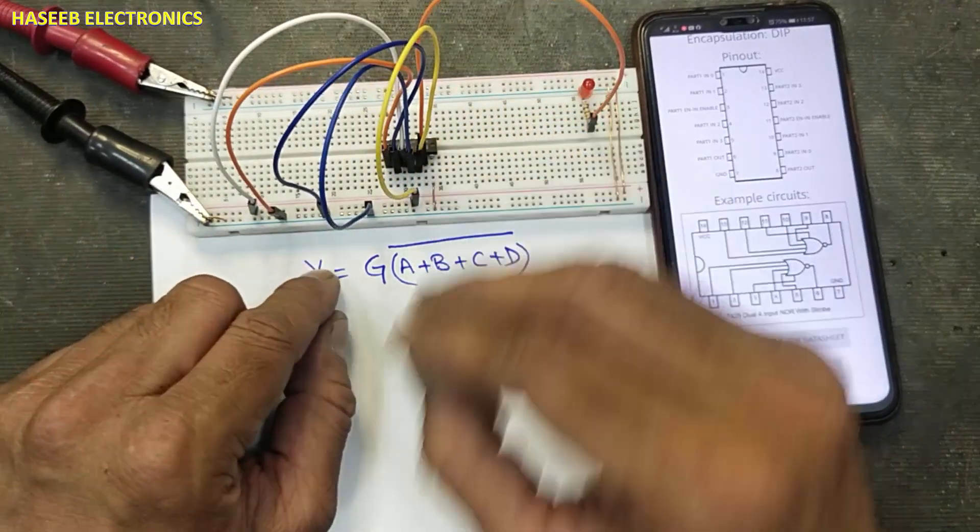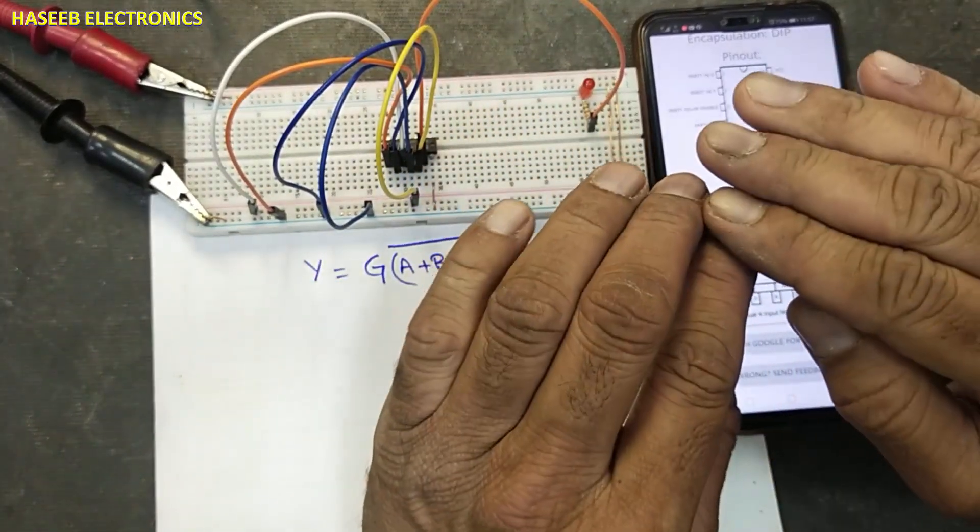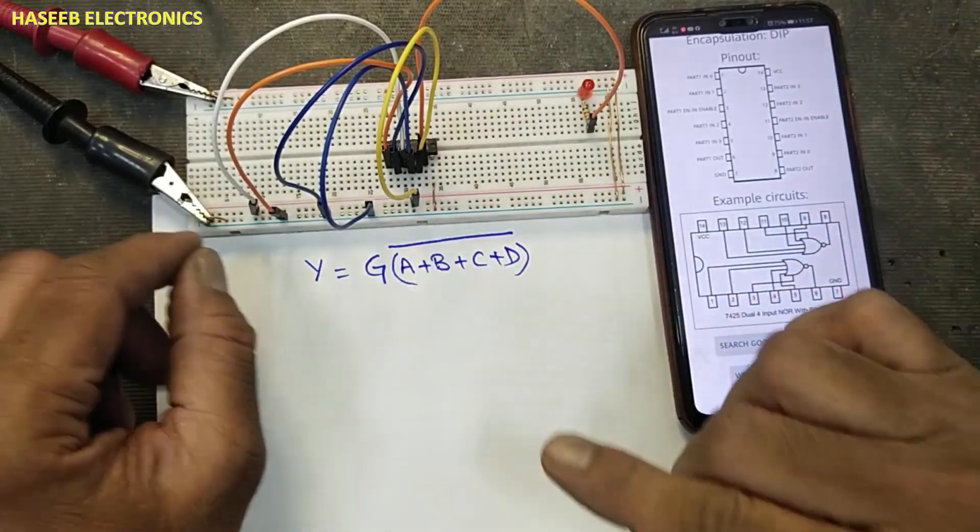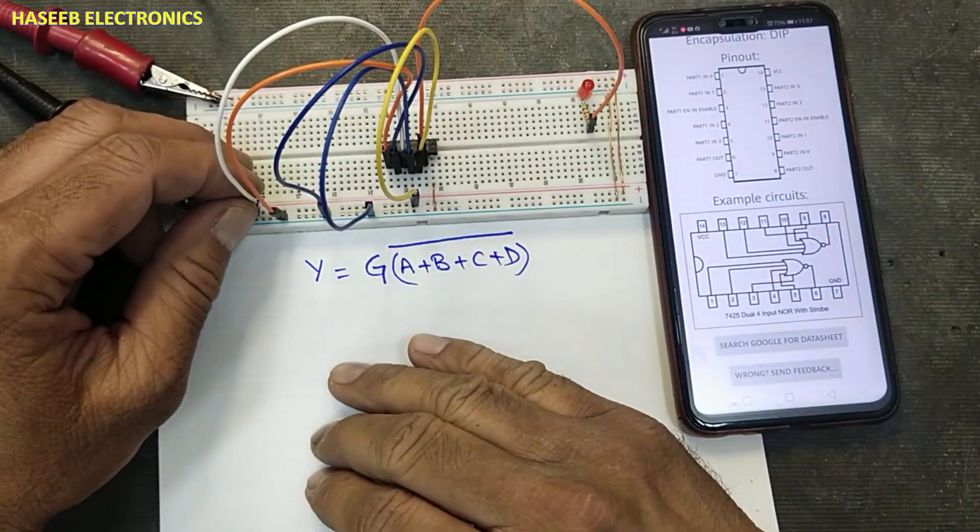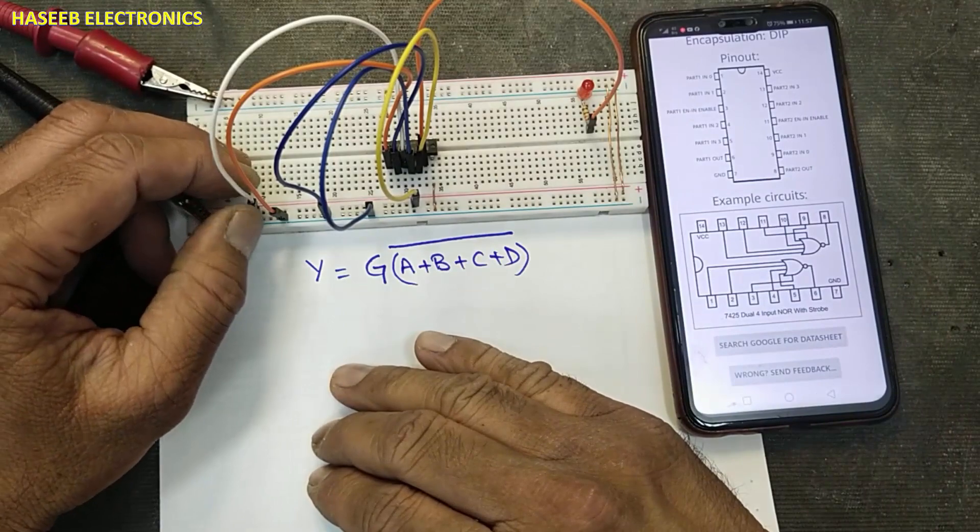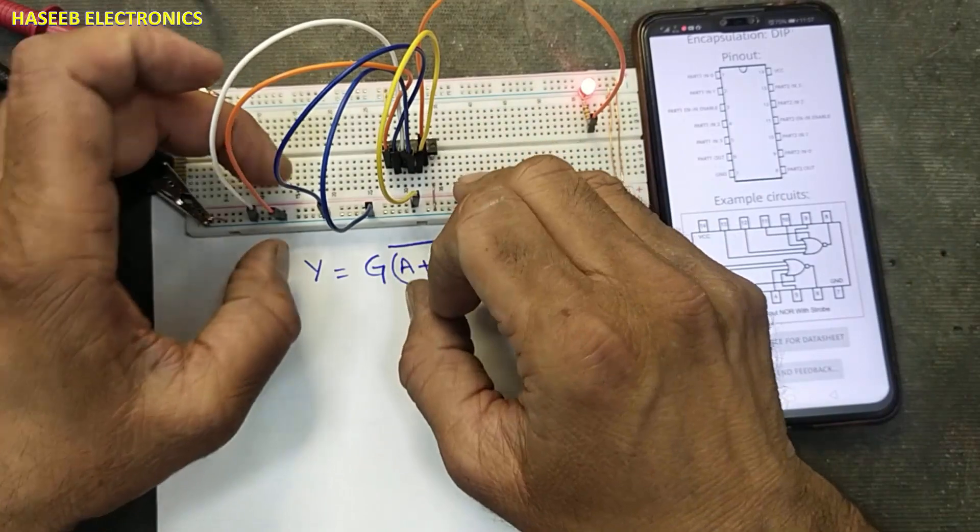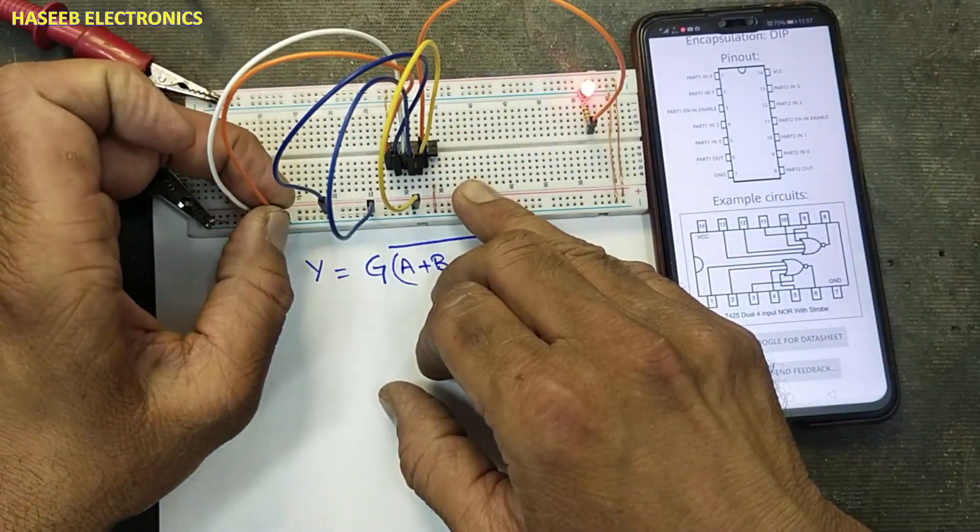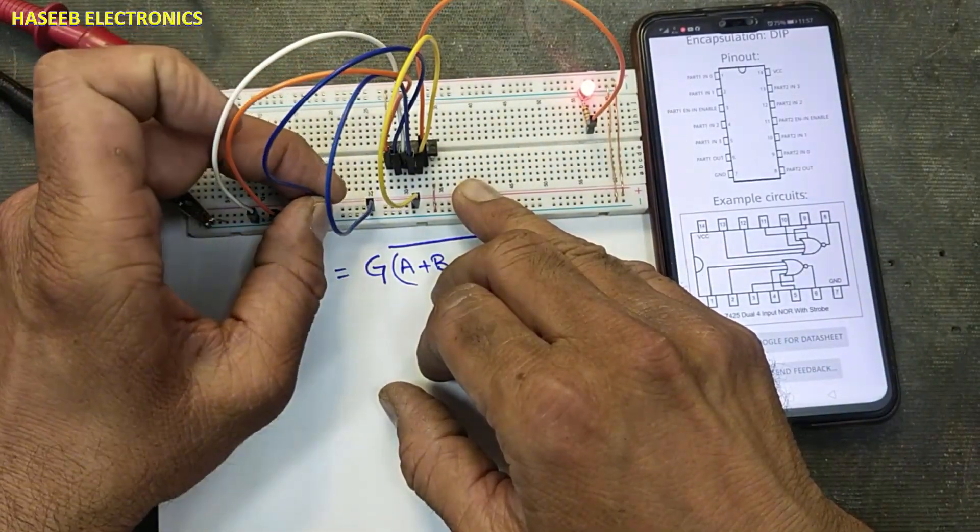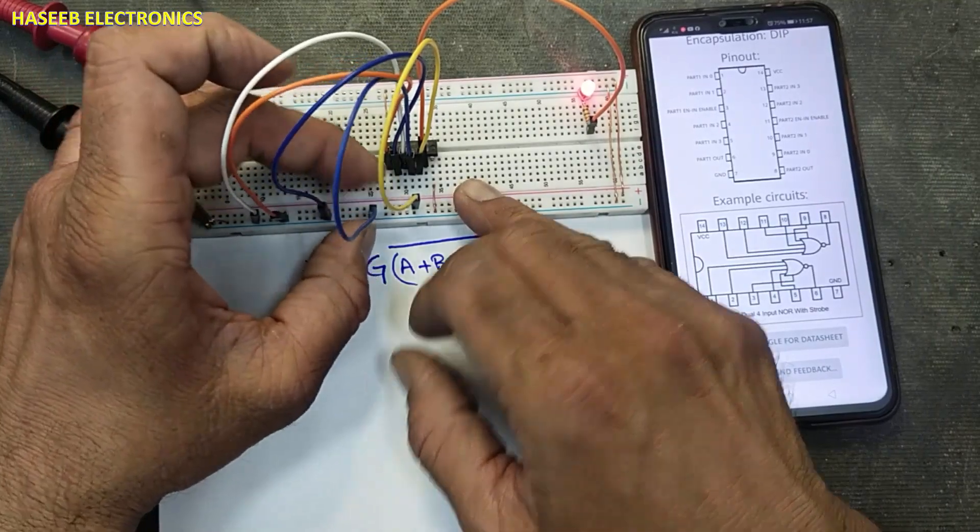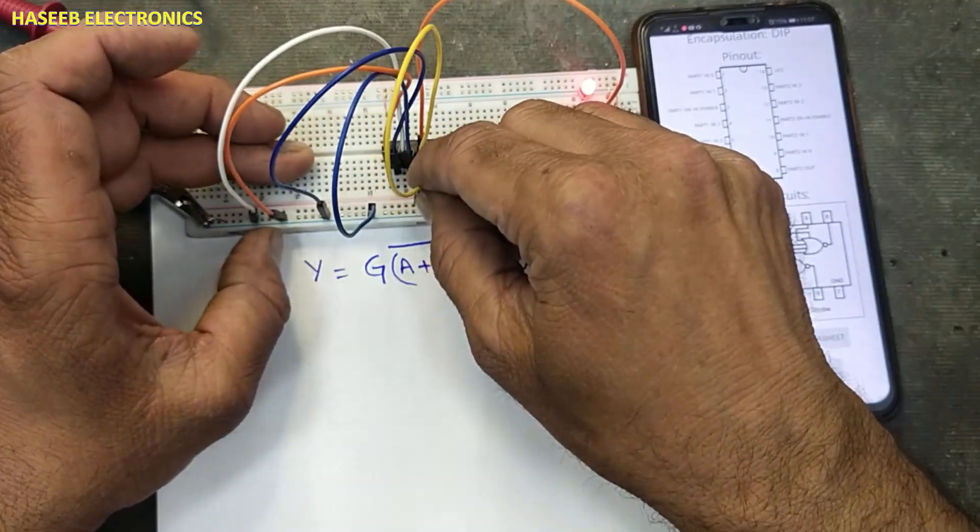Any one input goes high, the output will low. This is NOR function. And if we check this one, strobe input, if it is low, then there will no change in the output. Either any input pin is going high or low, the function is locked.